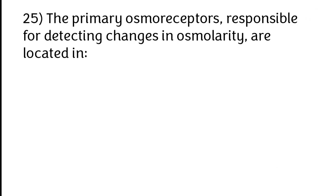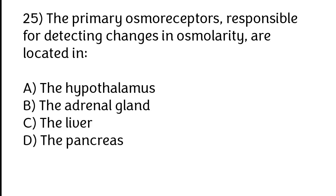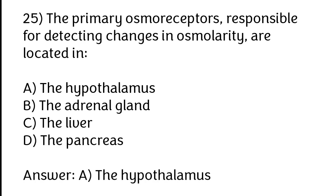The primary osmoreceptors responsible for detecting changes in osmolarity are located in: A) The hypothalamus, B) The adrenal gland, C) The liver, D) The pancreas. The correct answer is option A, the hypothalamus.